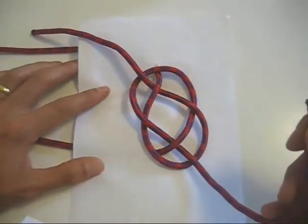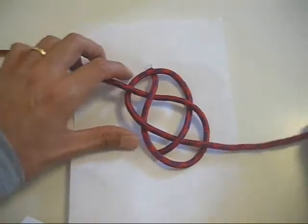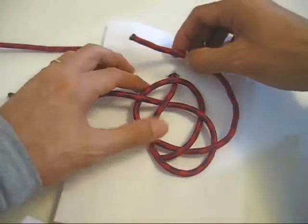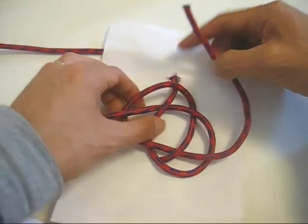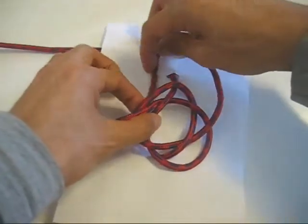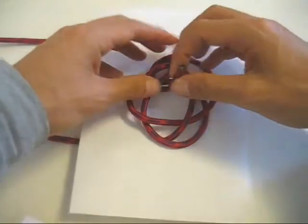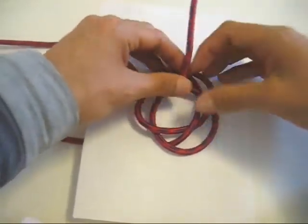I'm going to take the piece of cord that's coming off the bottom, I'm going to take it around the top, it's going to go past this point where the cord comes out through the top hole, past that, underneath everything, and up through this gap in the center.